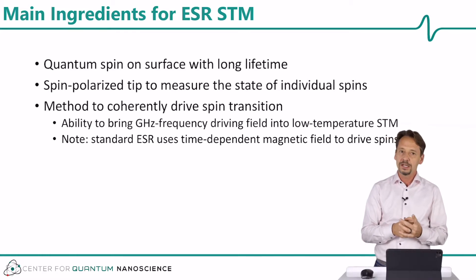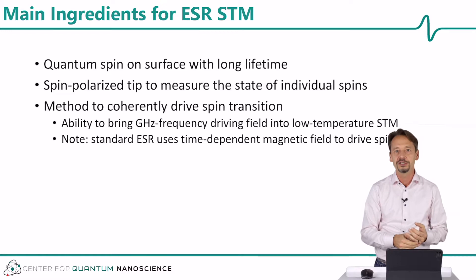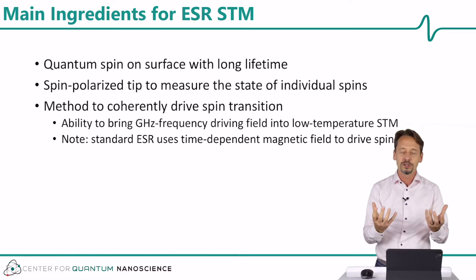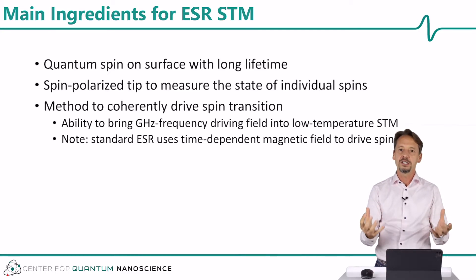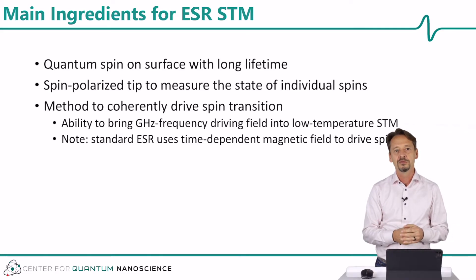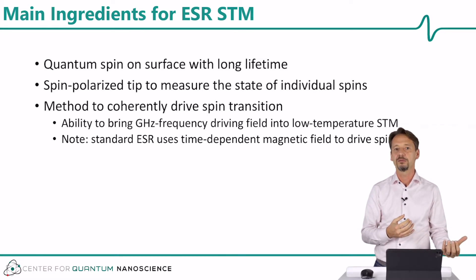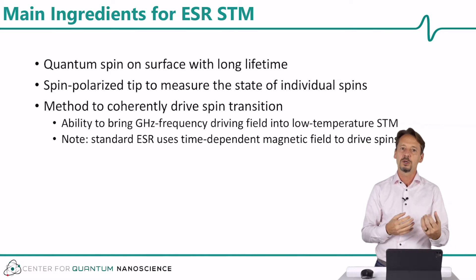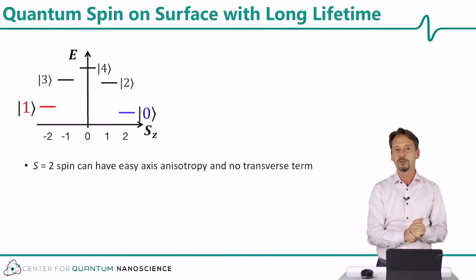Coherently driving spins has two main aspects. One, we need the technology — how do we get gigahertz frequencies into a low temperature STM? This is more of a technical question. But there is also a method problem: traditional ESR uses time-dependent magnetic fields, and time-dependent magnetic fields are very difficult to create in a low temperature STM. We still don't know how to do this. So we had to come up with a conceptually new idea to overcome this problem.